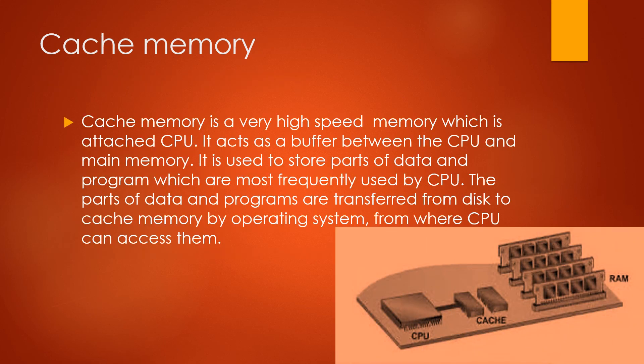Cache memory is a very high-speed memory which is attached to the CPU. As we can notice in the picture, it acts as a buffer between the CPU and main memory. It is used to store parts of data and programs which are most frequently used by the CPU. These parts are transferred from disk to cache memory by the operating system, from where the CPU can access them.